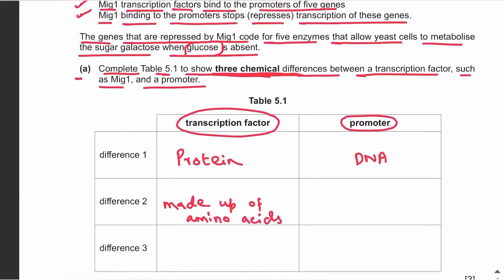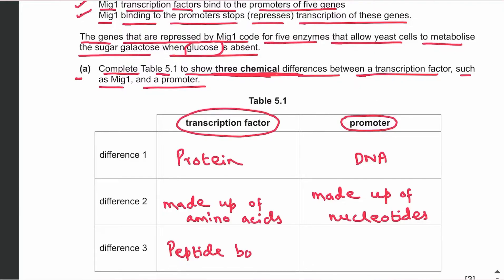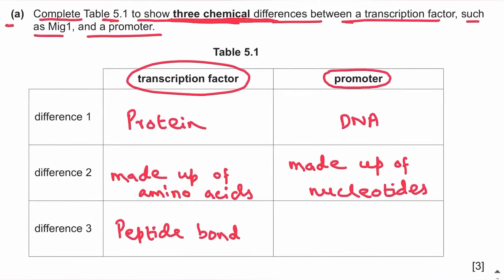The promoter, being DNA, is made up of nucleotides. The third difference is that the transcription factor, being a protein, contains peptide bonds, whereas the promoter, being part of the DNA, contains phosphodiester bonds.